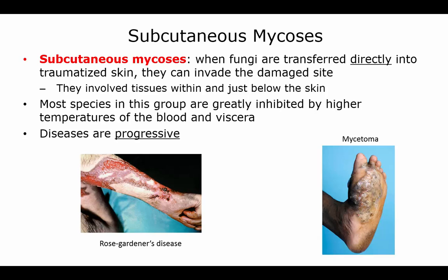In subcutaneous mycosis, the fungus is transferred directly into traumatized skin and involves tissues within or just below the skin. These infections are inhibited by higher temperatures found in the blood and viscera, so they don't spread deeper, but the diseases are progressive.